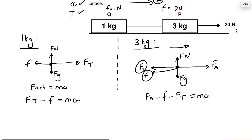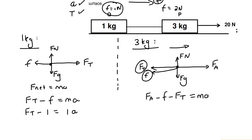Now fill everything in. For the one kilogram: F_T minus the friction force of one newton equals one times a. For the three kilogram: 20 (the applied force) minus its frictional force of two, minus its tension force — and the tension force is the same for both — equals 3a.